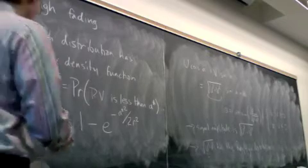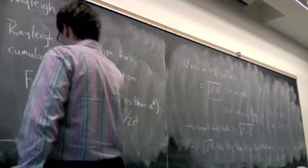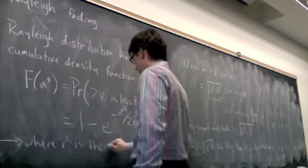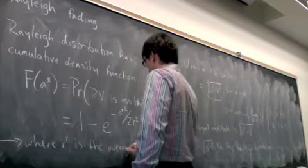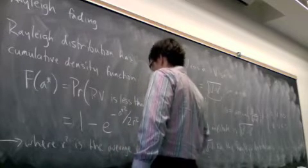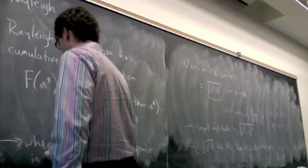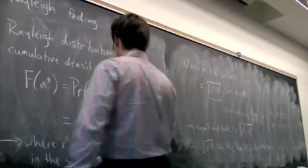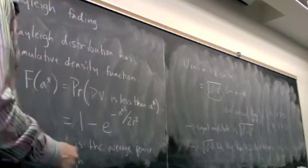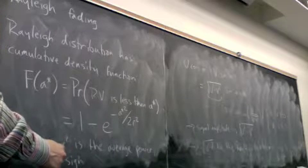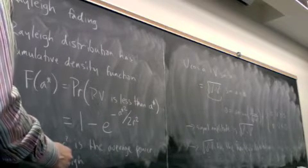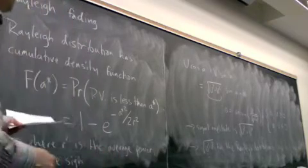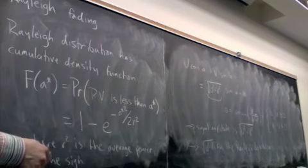So in other words, r squared is the average power in the signal. It would be the integral if what I gave you was the probability density function. But since I've received flack before for giving integrals to certain people, I'm looking at you Abdullah, I thought I'd give you the cumulative density function versus what you get after you integrate. So this is easier to deal with.